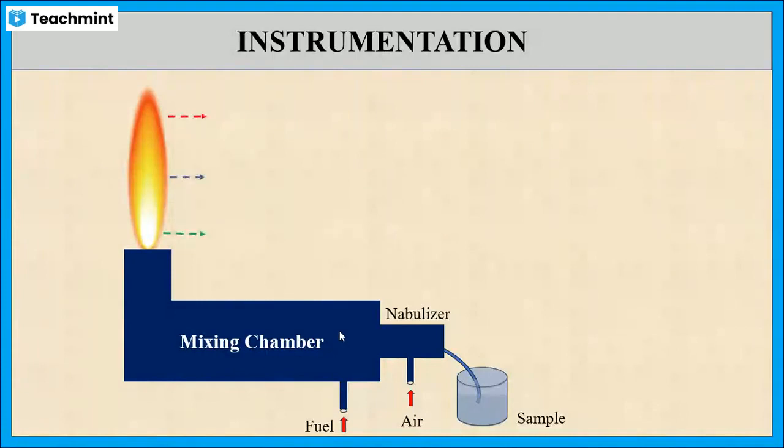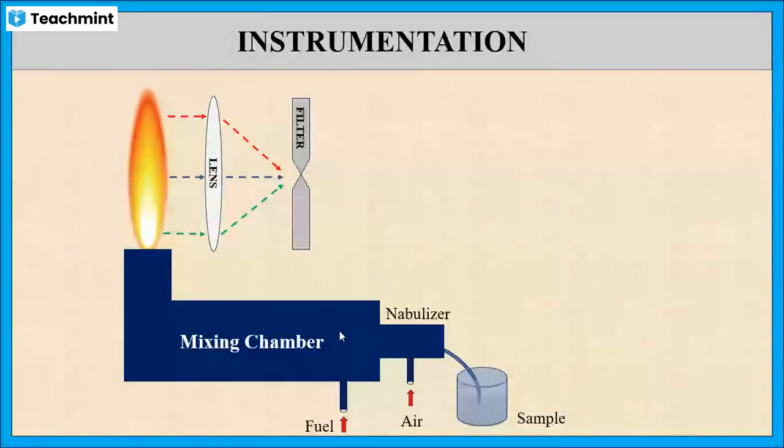These radiations are passed through the lens, these are focused into the slit of the filter. The filter allows a particular wavelength of radiation. For example, if we are interested to measure sodium, then wavelength will be set at the filter as 589 nanometer. Then the emitted radiation is received by the photo detector that converts it into electrical signal.